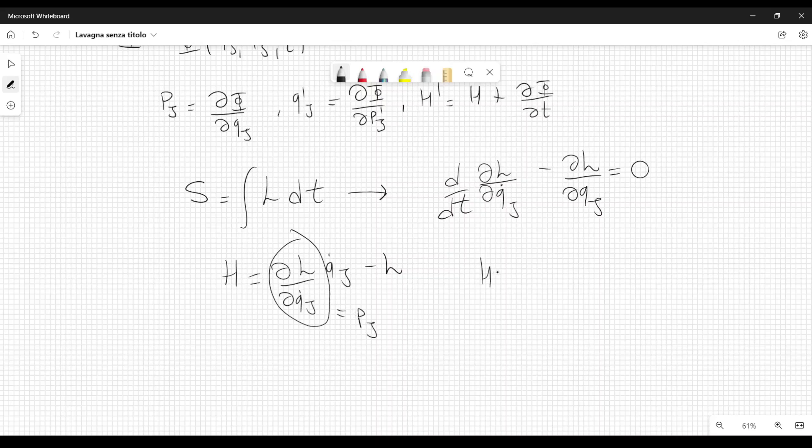Now, if we consider the Hamiltonian as a function of positions and momenta, in this case, from this equation here, if we consider the partial derivative of the Hamiltonian with respect to p j, we get that this is equal to q dot j. In principle, we also have minus the derivative of the Lagrangian with respect to momenta. But in this case,